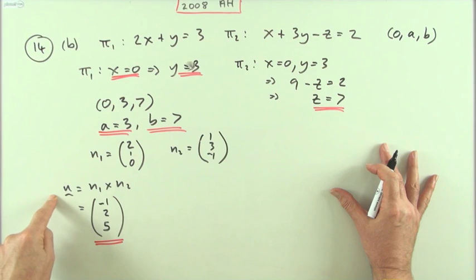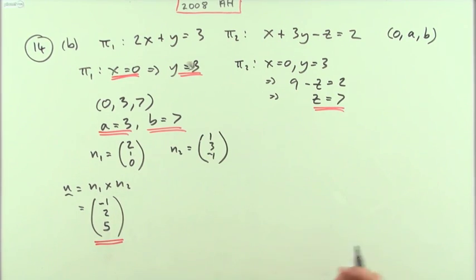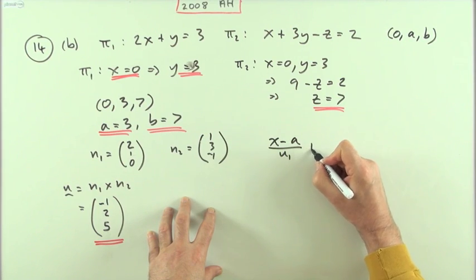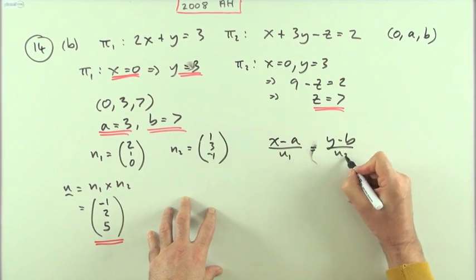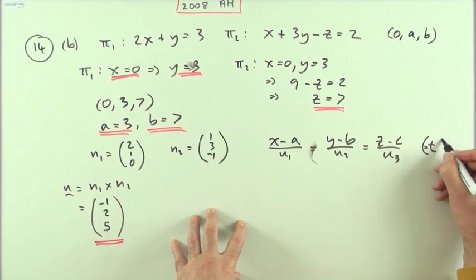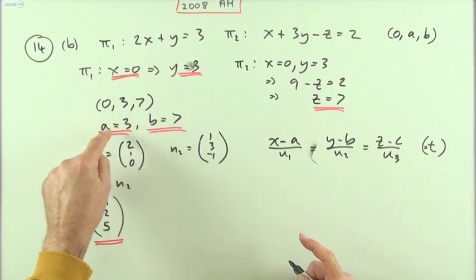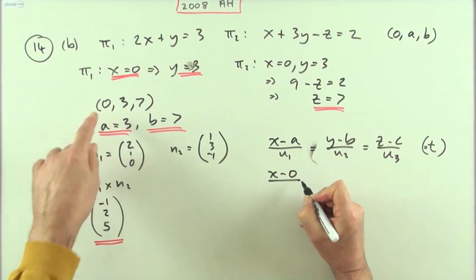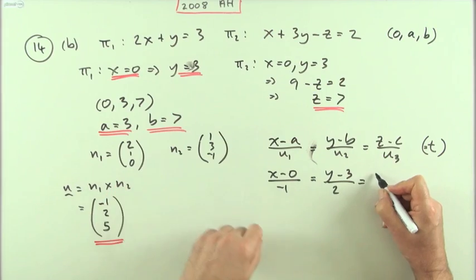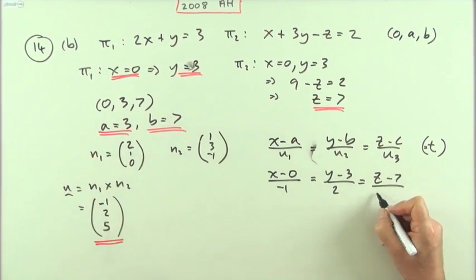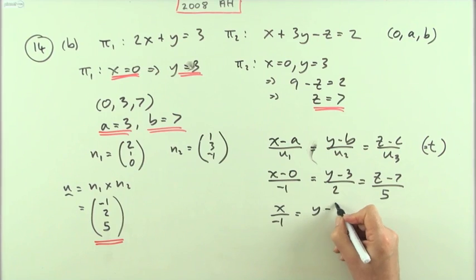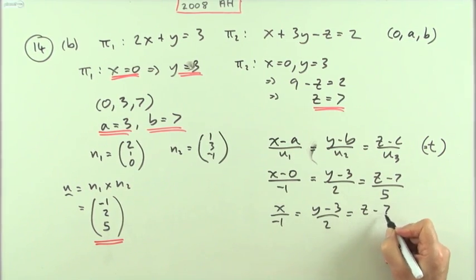Having a point on the line and the direction vector, we can write the equation in symmetric form: (x − a)/dₓ = (y − b)/d_y = (z − c)/d_z. With point (0, 3, 7) and direction (−1, 2, 5), the equation is x/(−1) = (y − 3)/2 = (z − 7)/5.